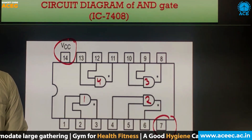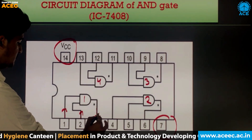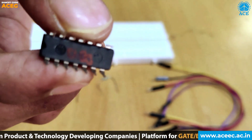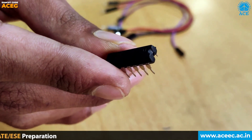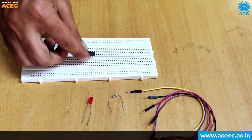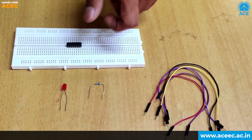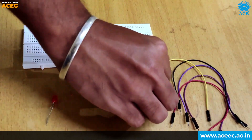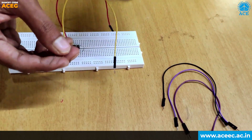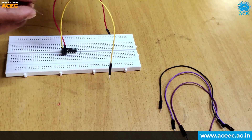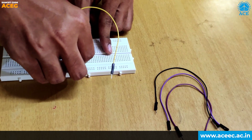Now we will see the practical working of the AND gate. In this AND gate, pin 1 and pin 2 will be the inputs and from pin 3 we will get the output. The AND gate IC number written on this IC is 7408. There are 14 pins in the AND gate. From the notch, we consider pin number 1. Here we place the AND gate IC on the breadboard. For connections, we are using jumper wires, and for output we are using an LED and resistors. The long leg of the LED is positive and the short leg is negative. The positive leg of the LED is connected to the resistor and the negative leg is connected to ground.